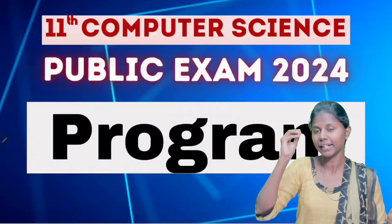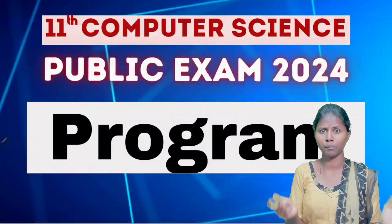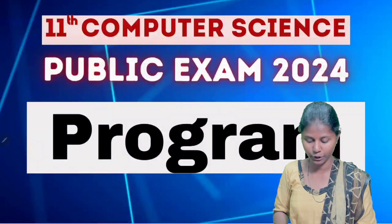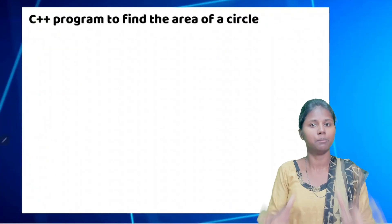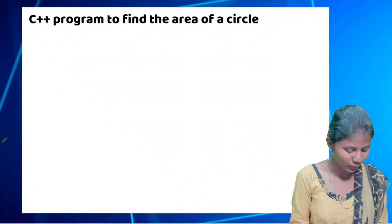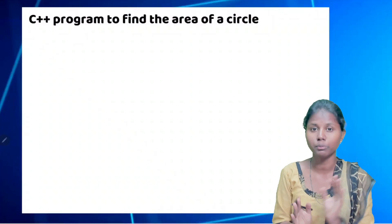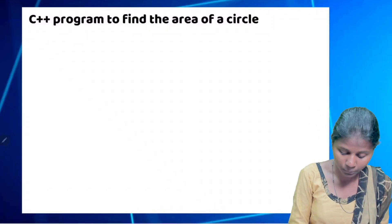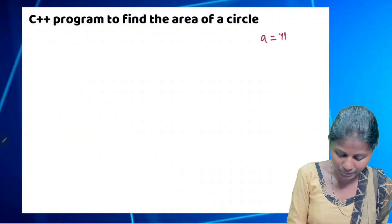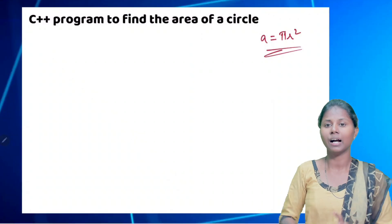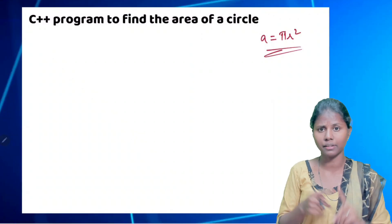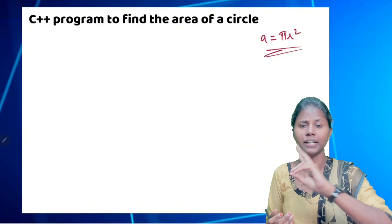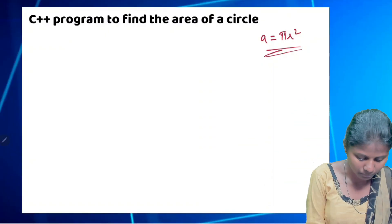In computer science, this video will cover how to write programs. The instruction in this video is to go to the public and write a C++ program to find the area of a circle. In the area of a circle, a is equal to pi r squared.